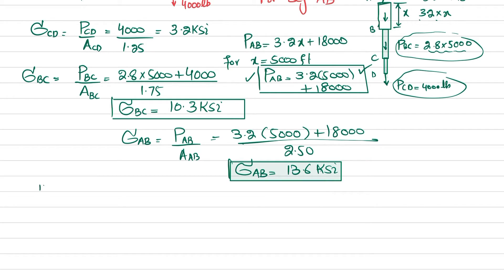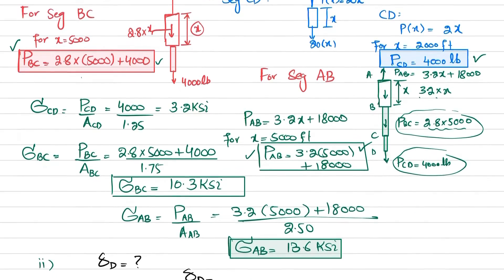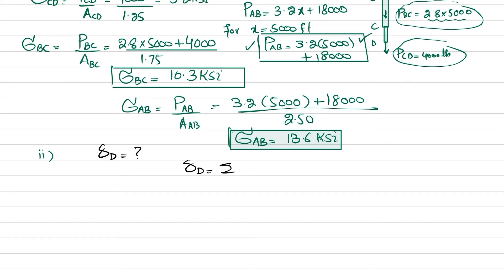We've found the stresses for part one. For part two, we need to find the elongation of point D with respect to point A. We have three segments: AB, BC, and CD. The total elongation is the sum of elongations in each segment, using the integral formula: δ = ∫ P(x) dx / (A(x) · E). For segment CD, the integral runs from 0 to 2,000.